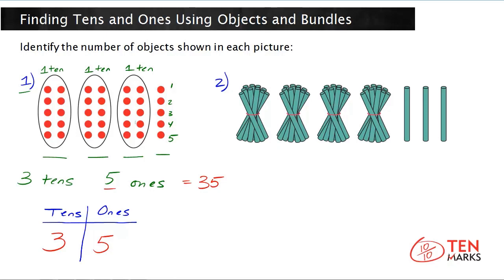Now let's look at the second picture. Here you can see you have different rods bundled together. And there are one, two, three, four bundles.